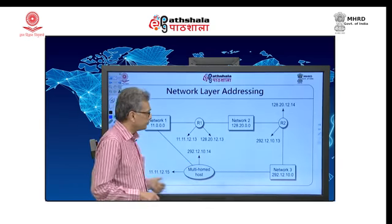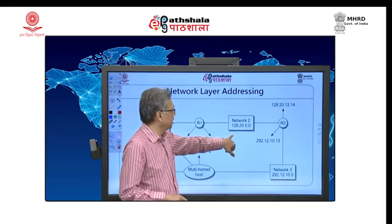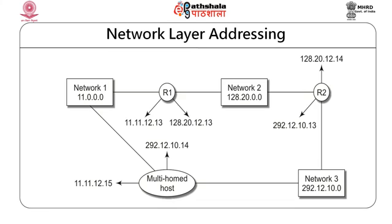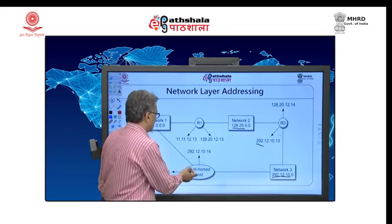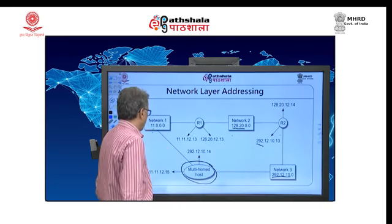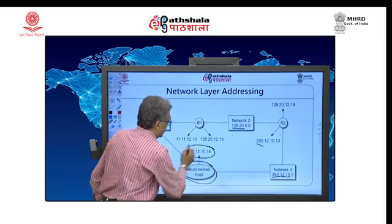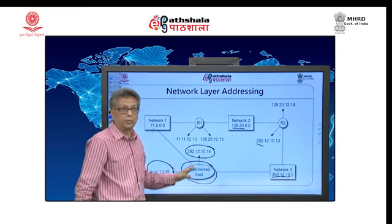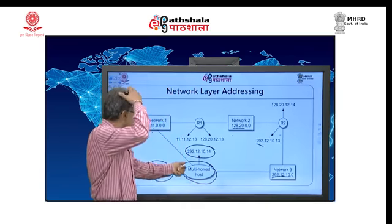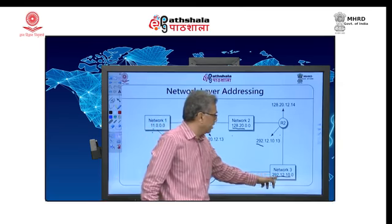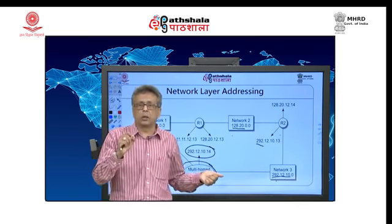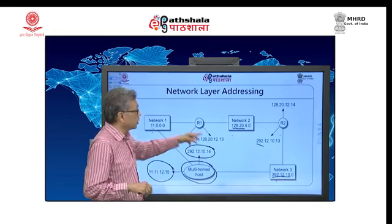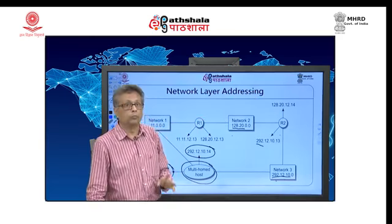Here is an example of different networks. Class A uses only the first byte as network address; Class B uses the first two bytes; Class C uses the first three bytes. One interesting thing is that a host connected to two networks has two IP addresses — as a member of each network, it has a different IP address. Both must be different because each network has a specific prefix. Every router also has multiple addresses — one for each network it is connected to.